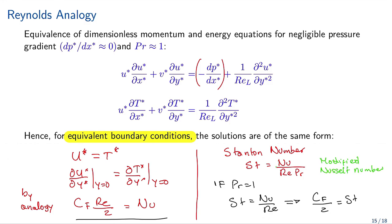This means we can do fluid mechanics experiments and get information about heat transfer. However, this applies only in the particular situation where the pressure gradient is negligible and Prandtl is approximately 1, meaning we are working with a gas. That is how many of these convection coefficients are determined. I will stop the dimensional analysis at this point — thank you.